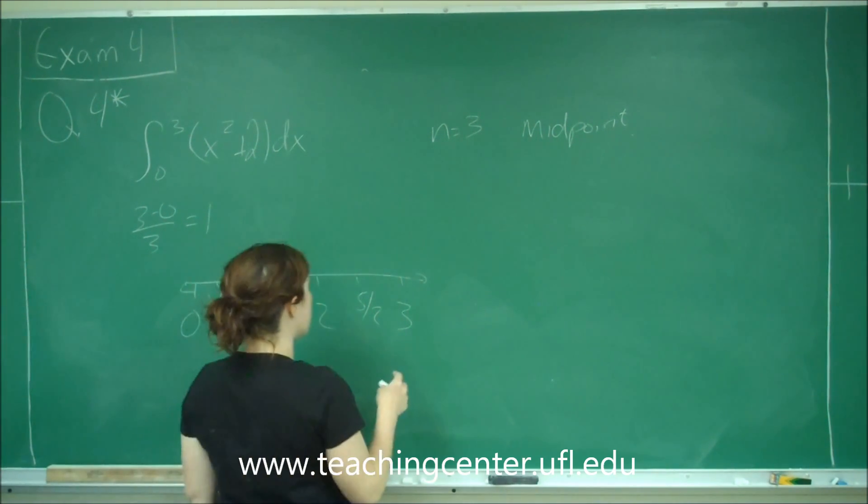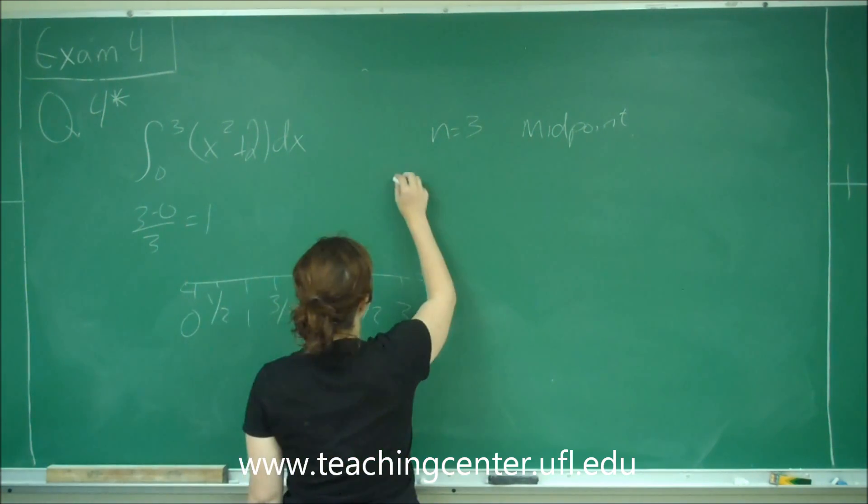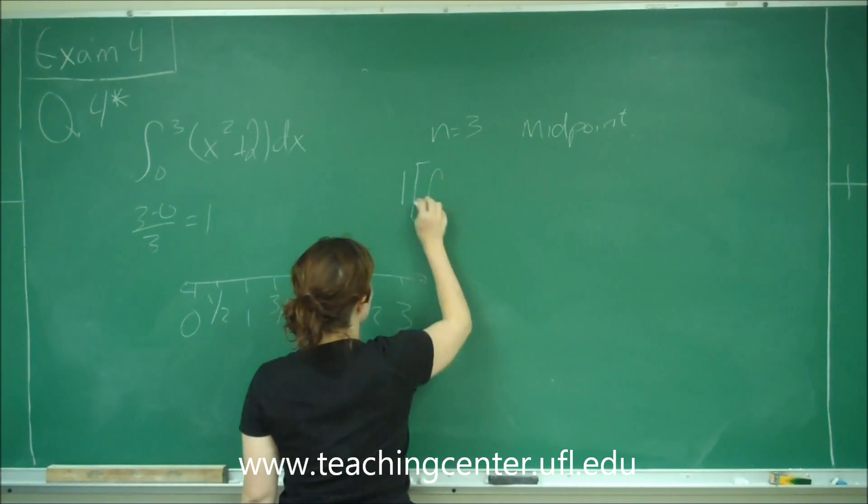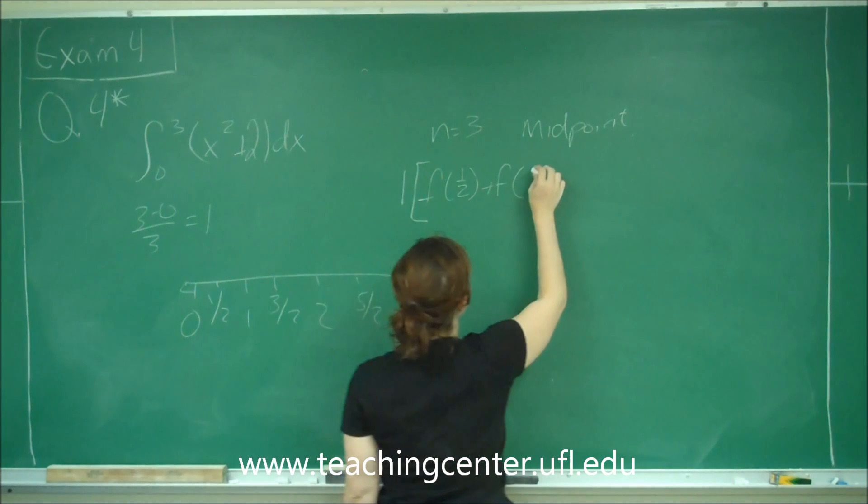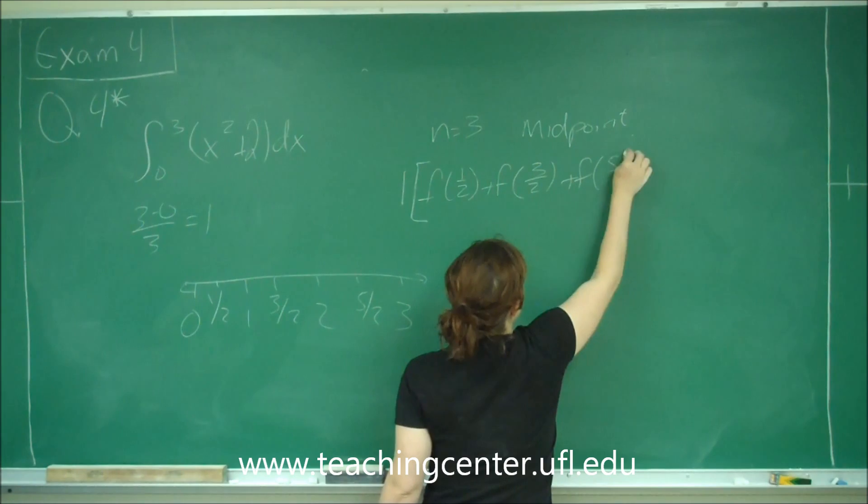And so our delta x is always one, so for us it's going to be delta x equals one times f of one half plus f of three halves plus f of five halves.